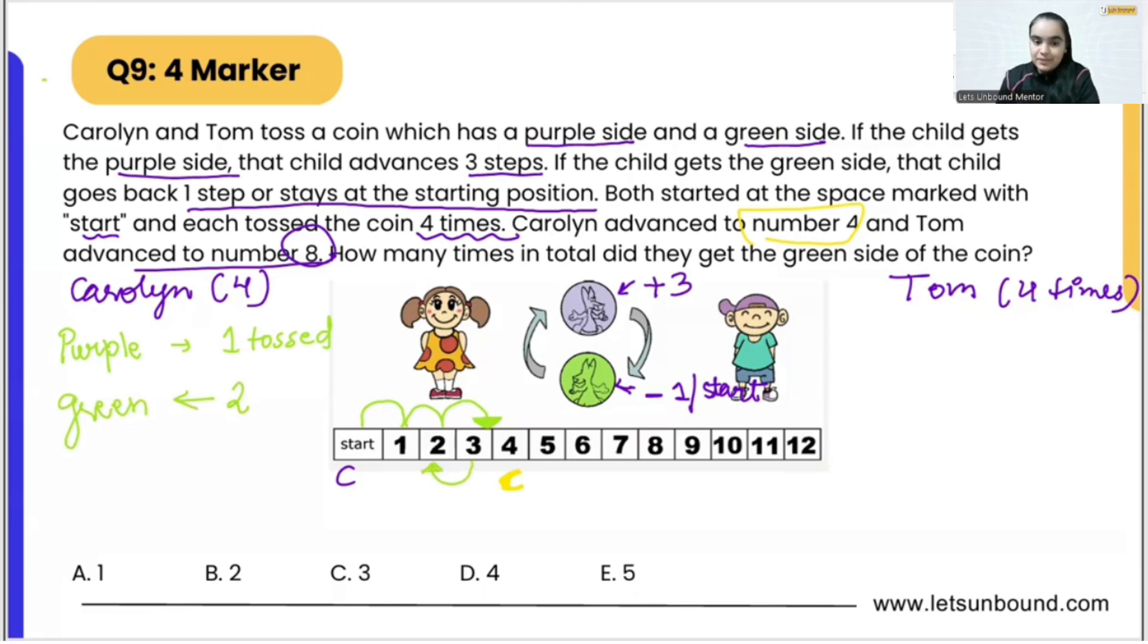So as the first toss she got purple, three steps forward. As the second toss we got green, one step back. Again we got green, so one step back again. Now Caroline is at number one. As the fourth and final toss, she got purple. She was at number one but she got purple side that will advance her to number four.